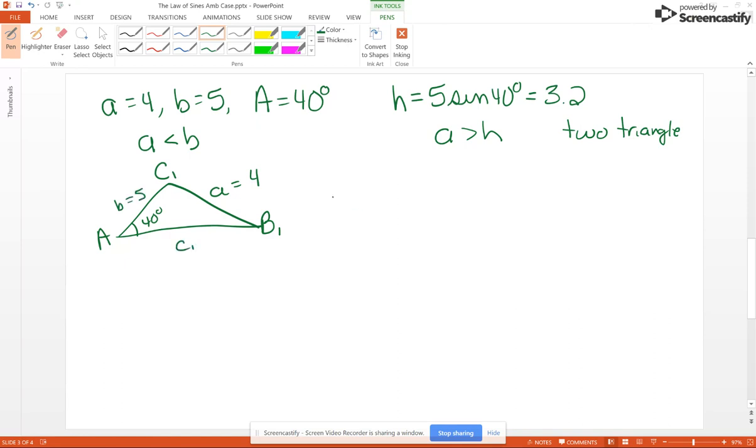Once again we're going to start off with B, but we're calling it B1. So sine of B1 over B equals sine of A over A. Just to be short because we did this before – sine of B1 is going to be B sine of A over A, so B1 is the inverse sine of that – B sine of A over A.